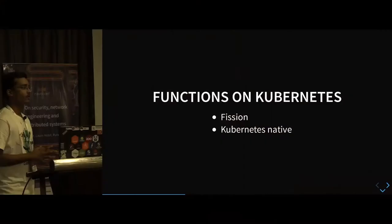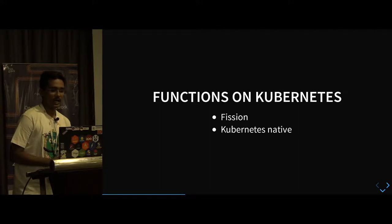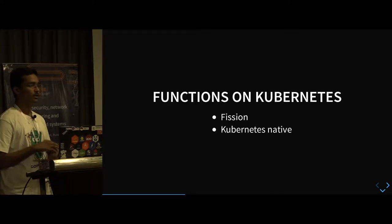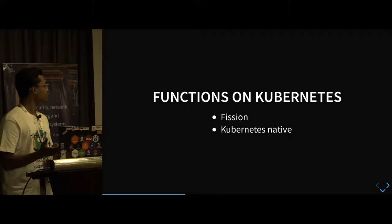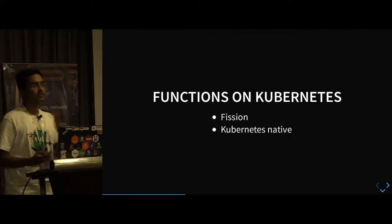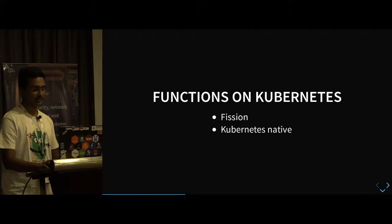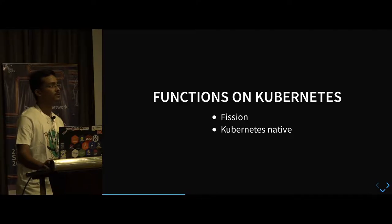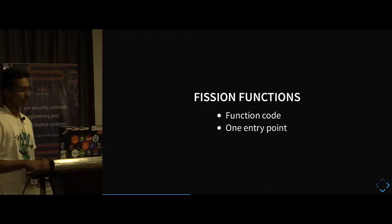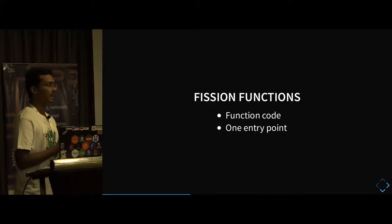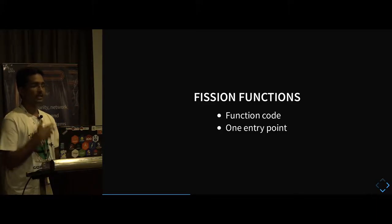Fission is basically built on top of Kubernetes. It uses custom resource definitions, a feature of Kubernetes, and you will have everything on the Kubernetes cluster itself. We will be discussing these specific tools, but the things we learn can be applied to any serverless platform plus tracing backend. First, let us look at all the components we will be dealing with today. First is Fission functions — these are our function code which can be in any language and will have one entry point where your code will execute.